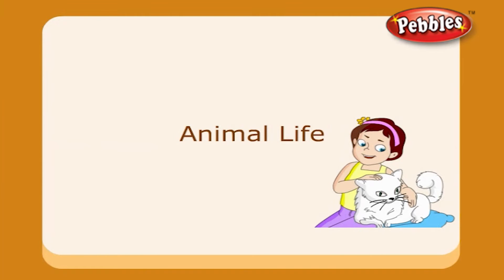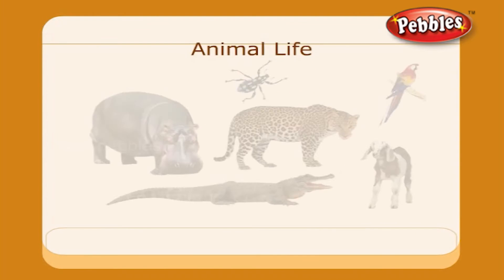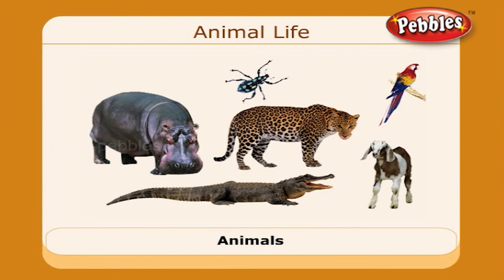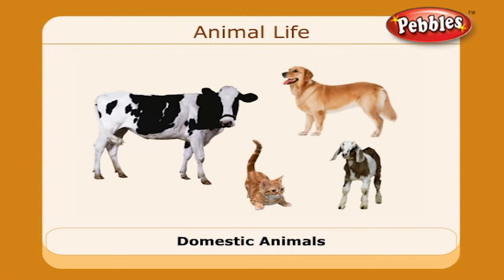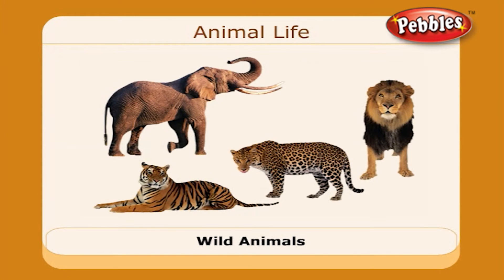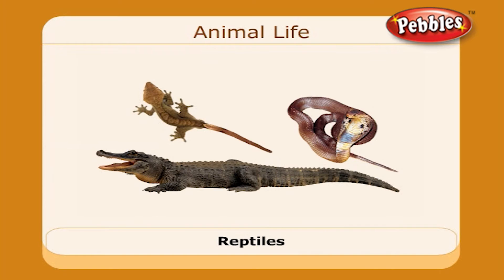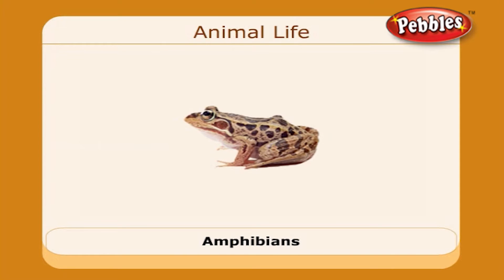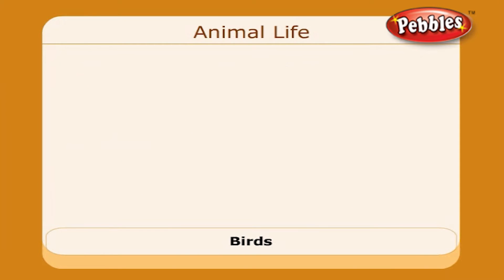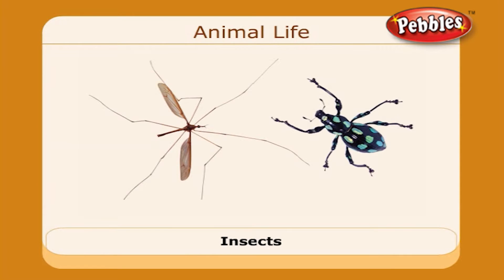Animal Life. Animals are of various categories: domestic animals, wild animals, reptiles, amphibians, birds, and insects. Let's see them one by one.